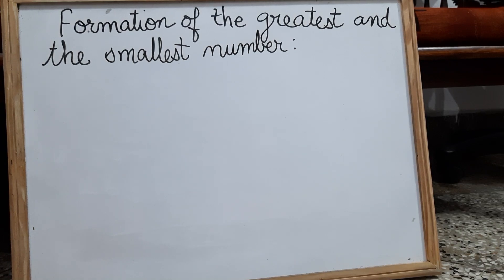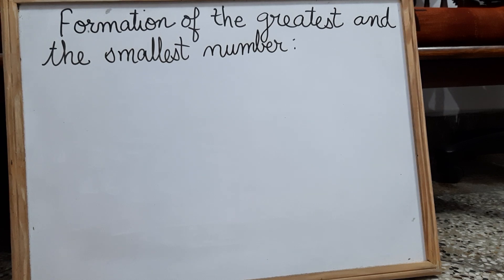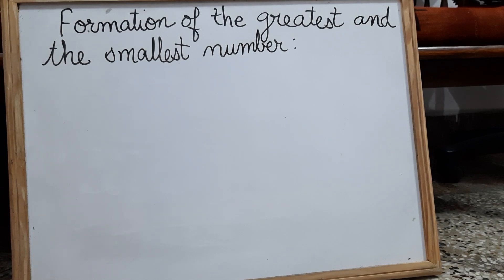Hello children. In this video we are going to practice how to form the greatest and the smallest number using the digits which are given. So the rule is very simple. While forming the greatest number, start with the greatest digit. And while forming the smallest number, start with the smallest digit. Remember these two rules first.